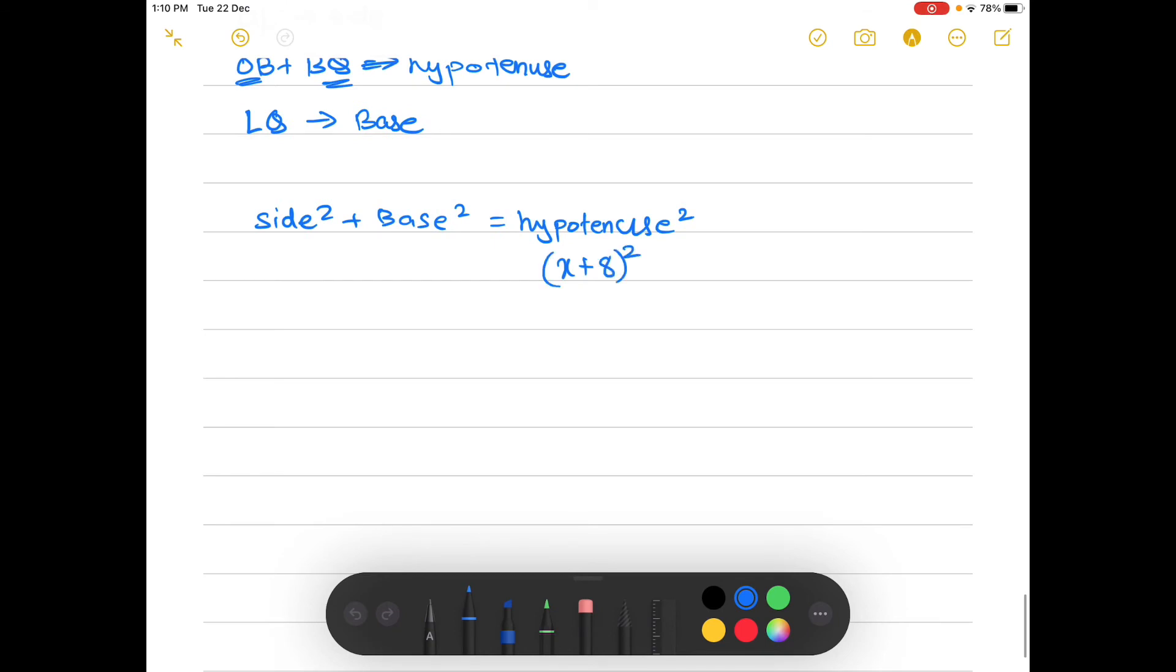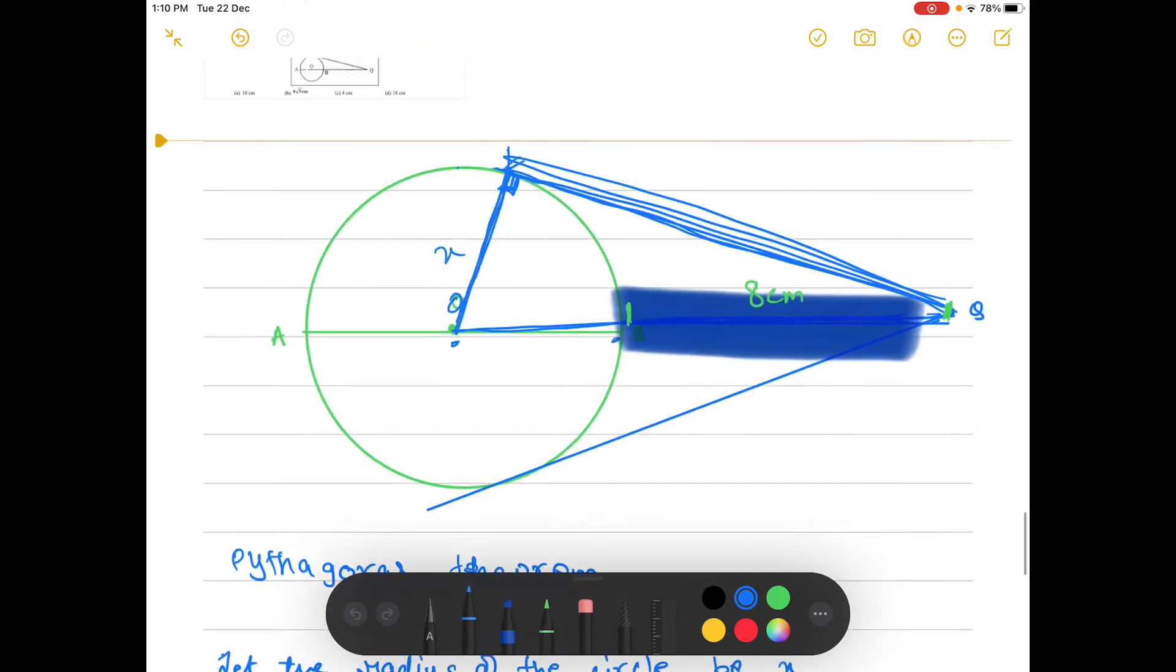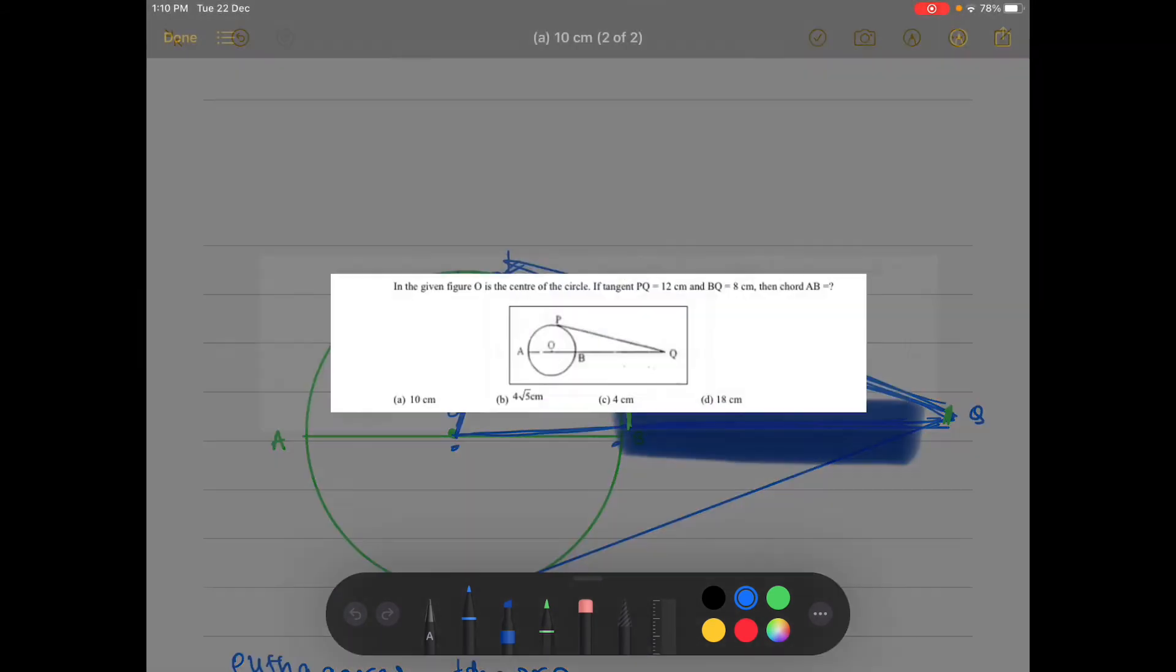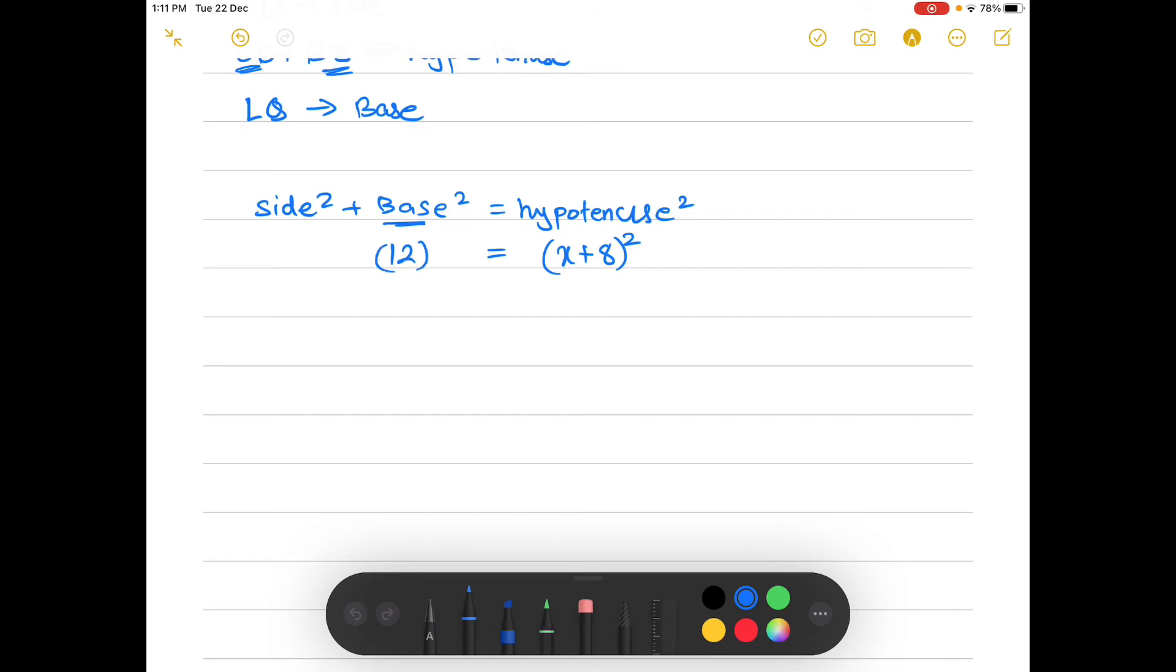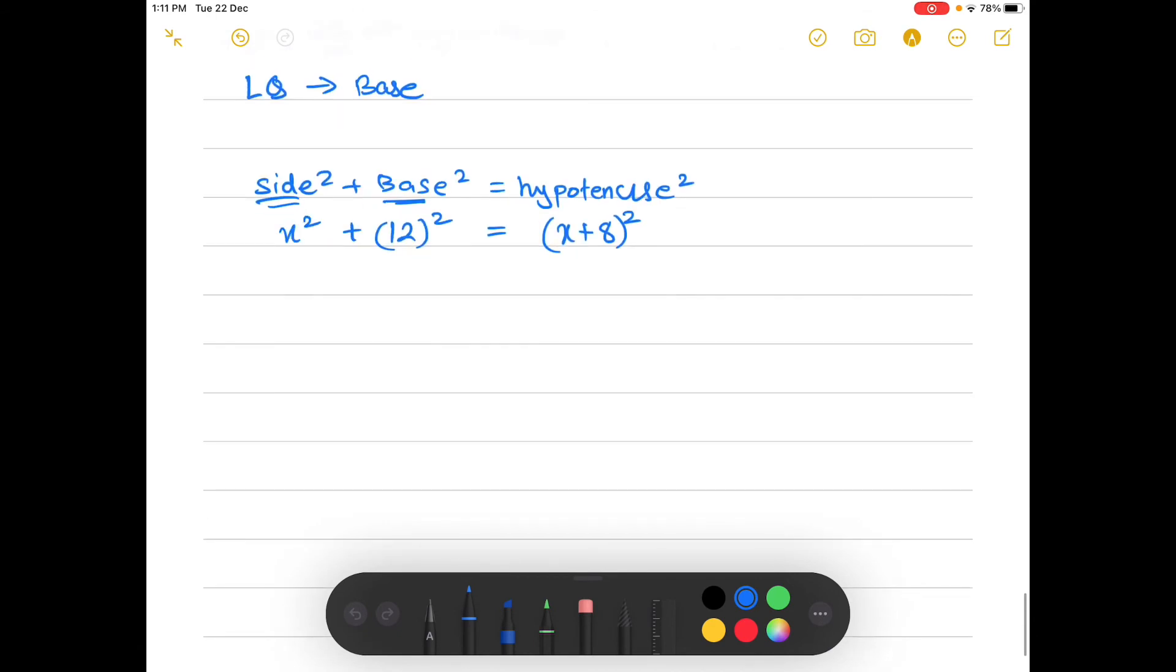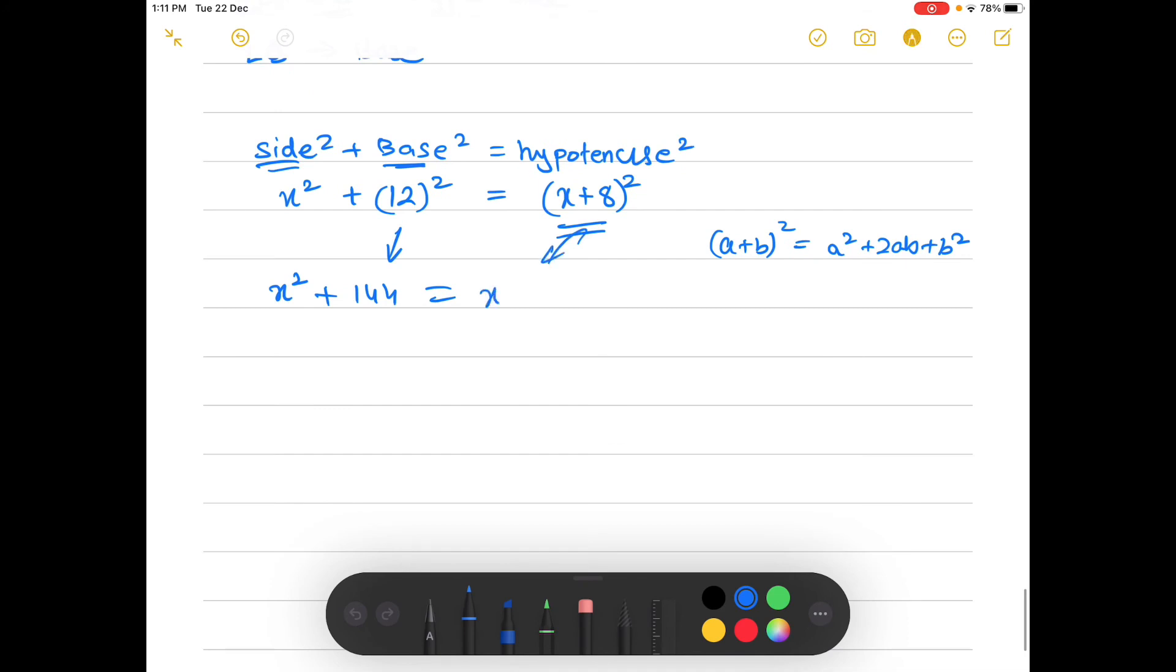We need to take it square. We know the base LQ is given as 12 centimeters, so the base is 12 centimeters, so we take the square of it as well. And the side we know is x, so x squared. So x squared plus 144, which is 12 squared, is equal to x plus 8 squared. We know the identity (a + b)² = a² + 2ab + b², so we can put it directly here: x² + 2 × 8 × x, which is 16x, plus 8 squared, which is 64.